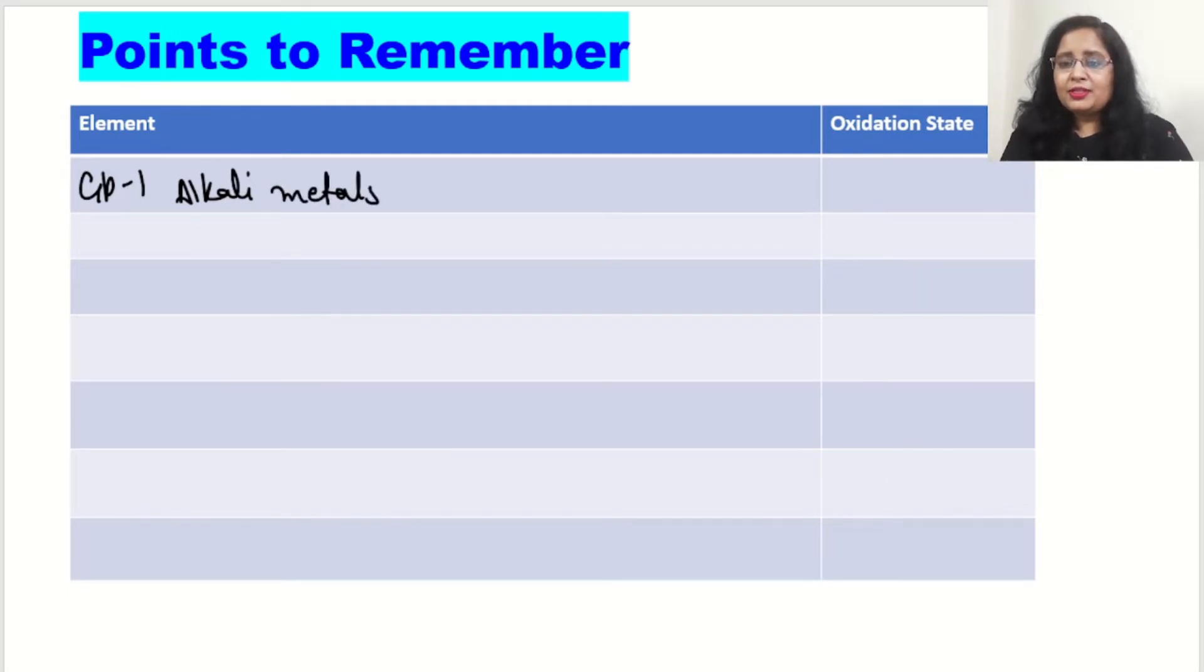Their examples are lithium, sodium, potassium, rubidium, cesium, and francium. Oxidation number of alkali metals are always plus 1 fixed.